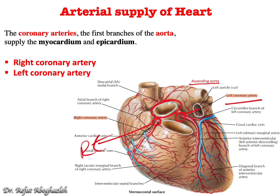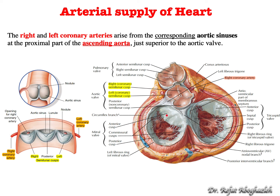Now let us start talking about the coronary arteries. This is the ascending aorta — the first part of the aorta. If you look to the right and a little to the left, you will see two coronary arteries: one is right and one is left. Before we start, let me remind you of what was covered previously.